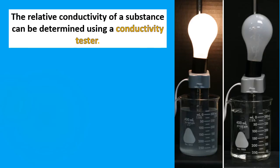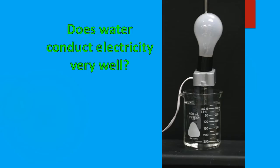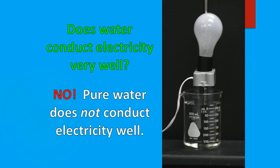The relative conductivity of a substance is measured using a conductivity tester. We place it in the solution: if the bulb lights, it's a conductor; if it does not light, it's a non-conductor. Water does not conduct electricity very well. If we put the conductivity tester in pure water, the bulb does not light. By the end of this lesson, you'll be able to explain why water does not conduct electricity very well.